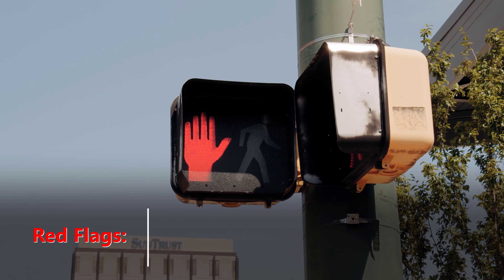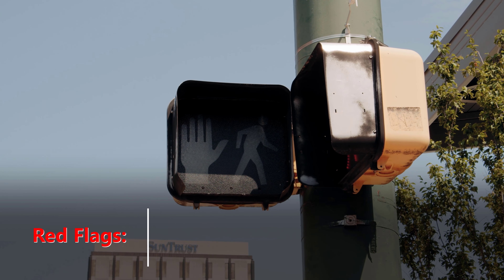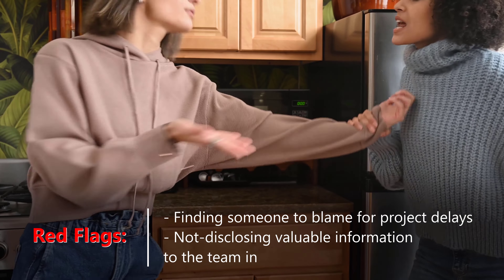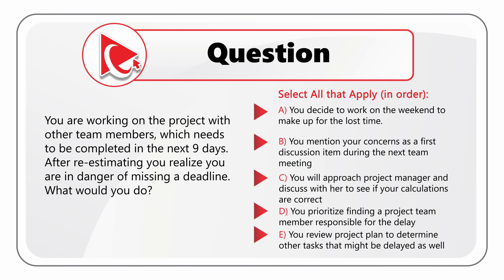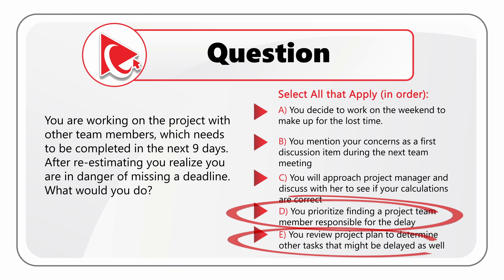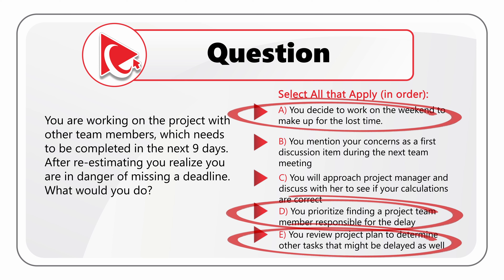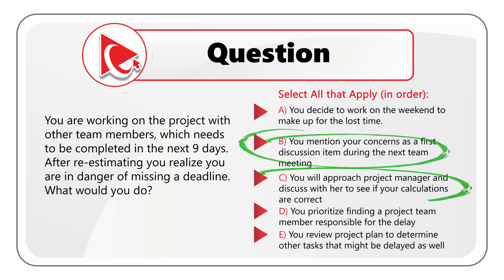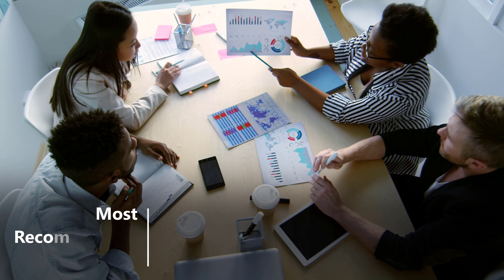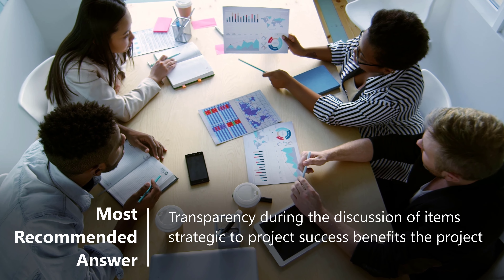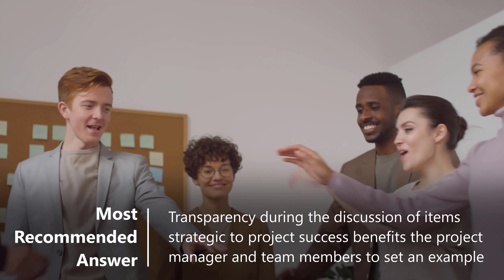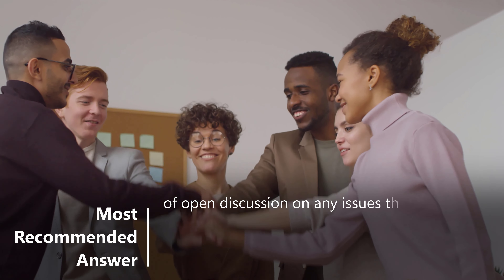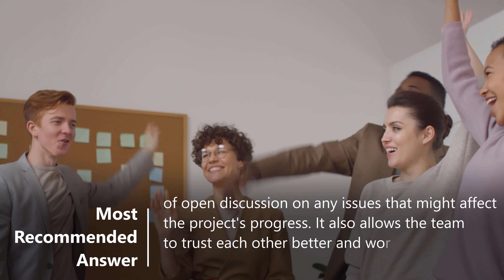This question detects if you prioritize finding someone to blame for project delays and non-disclosing valuable information to the team in a timely manner. The worst choice is Choice D: you prioritize finding a project team member responsible for the delay. Choices E and A are also not recommended, mainly because it's not clear if the project is truly delayed — it is always better to have an open discussion before trying course correction.